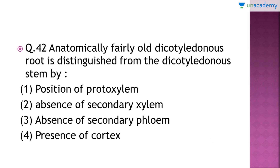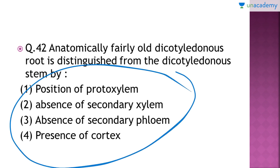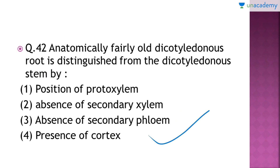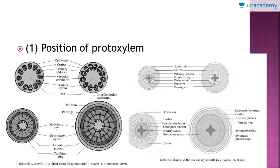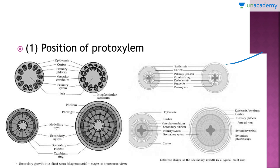Question number 42: anatomically, how is a fairly old dicotyledonous root distinguished from a dicotyledonous stem? The right answer is option number one — by the position of protoxylem. You can see the diagrams of both. In the stem, protoxylem lies towards the center (the pith) and metaxylem lies towards the periphery.